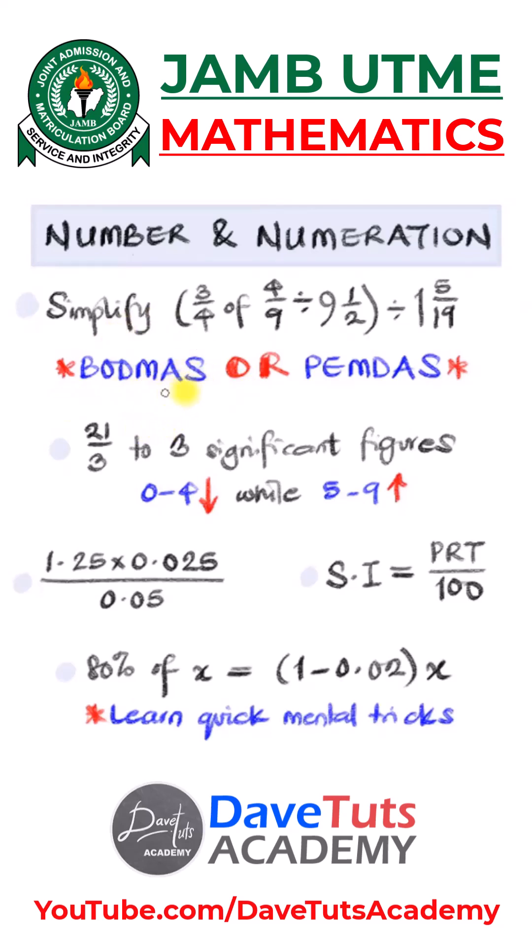And very important for you to solve this is BODMAS or PEMDAS. This is just bracket of division, multiplication, addition and subtraction. Or you can say parenthesis, exponent, multiplication, division, addition and subtraction. That's showing you the order of operation of the normal mathematical processes so that you know the first thing to do when you're having a multiple of operations like in this particular question.